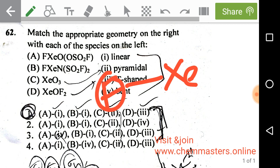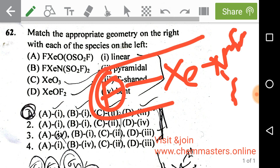For XeO(OSO2F), xenon makes one sigma bond with one fluorine, and oxygen is connecting with the other part of the species as OSO2F, so it is linear in shape. At the same time, in the second species XeN(SO2F)2, nitrogen is making a sigma bond with xenon, and the other two SO2F groups make it also linear in shape. So the first two species are linear in shape.